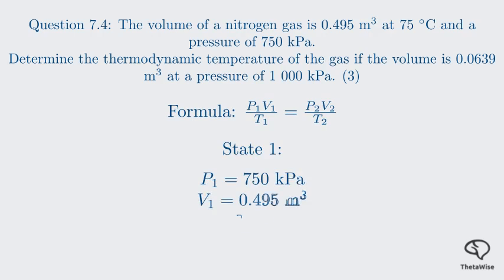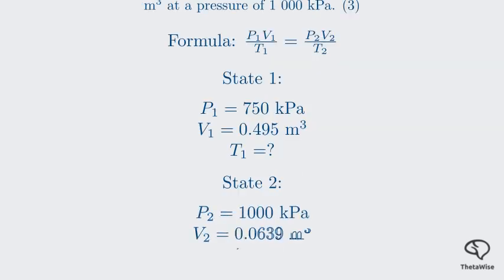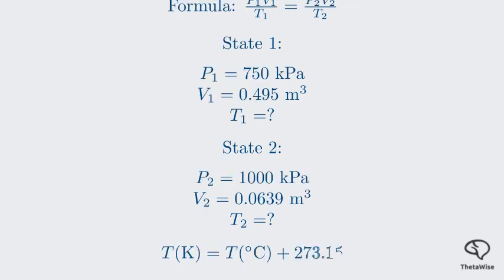For state 1: P₁ = 750 kPa, V₁ = 0.495 m³. For state 2: P₂ = 1000 kPa, V₂ = 0.0639 m³, and we must find T₂. The initial temperature is 75°C. Temperature must be in Kelvin: T₁ = 75 + 273.15 = 348.15 K. The memo used 348 K, so we will proceed with that for consistency.